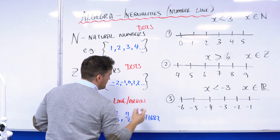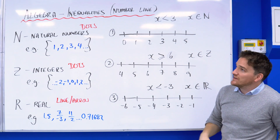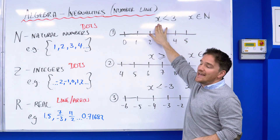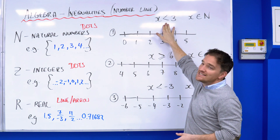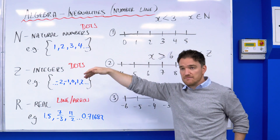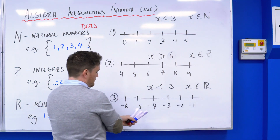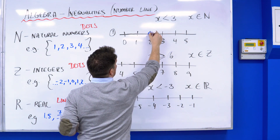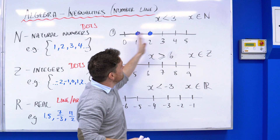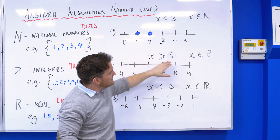I'll show you what I mean with three examples. Remember that the inequality eats the bigger number — like a crocodile. Here the bigger number is three, so you can say three is greater than x, or x is less than three. Numbers less than three would be two, one, zero, and so on. But since x is an element of natural numbers, the only whole numbers less than three are two and one. So I put a dot on two and a dot on one — I don't put a dot on three because it's less than three.